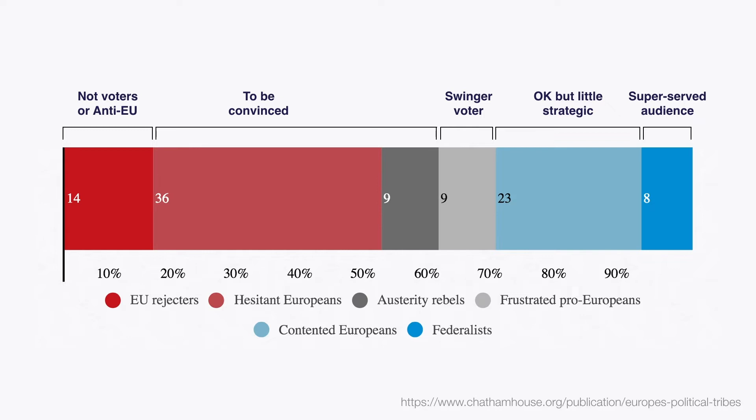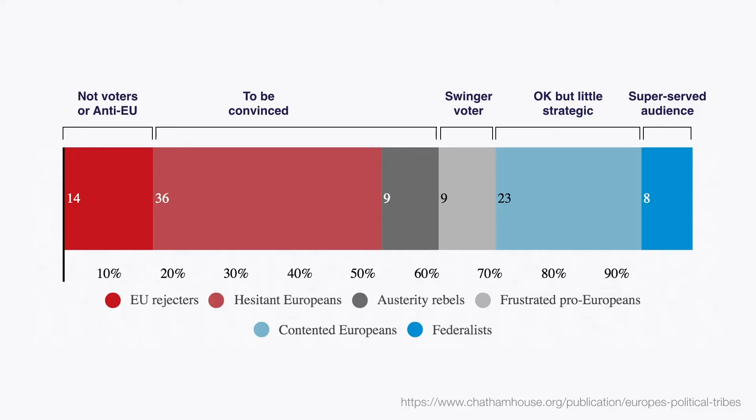Finally, on the right, we have little strategic audiences — people who are already interested by the idea: contented Europeans, and on the completely right part of the spectrum, federalists — people who will go to vote anyway. If you are a European institution, the audiences you have to avoid talking to, because you will lose money for no good results, are the super-served audiences: people so convinced by the EU idea that they don't need additional messages. I recently worked with a large museum of science in Europe, and they completely decided to stop talking to people who already like science and visit museums, because their mission is to convince more people to visit exhibitions — not to talk to the same ones over and over again.